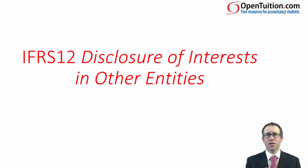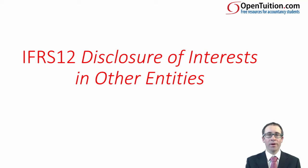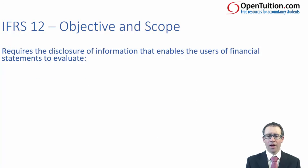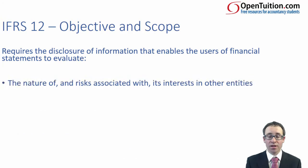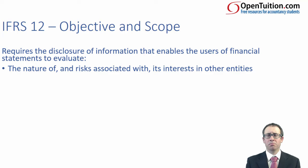Are there any other risks associated with the investment that the user of the accounts may not be directly aware of by just reading the headline figures and financial statements within the group accounts? Essentially, that's what IFRS 12 is all about. The objective is that it requires disclosure of information that enables users of financial statements to evaluate the nature of the risks associated with its interest in other entities.